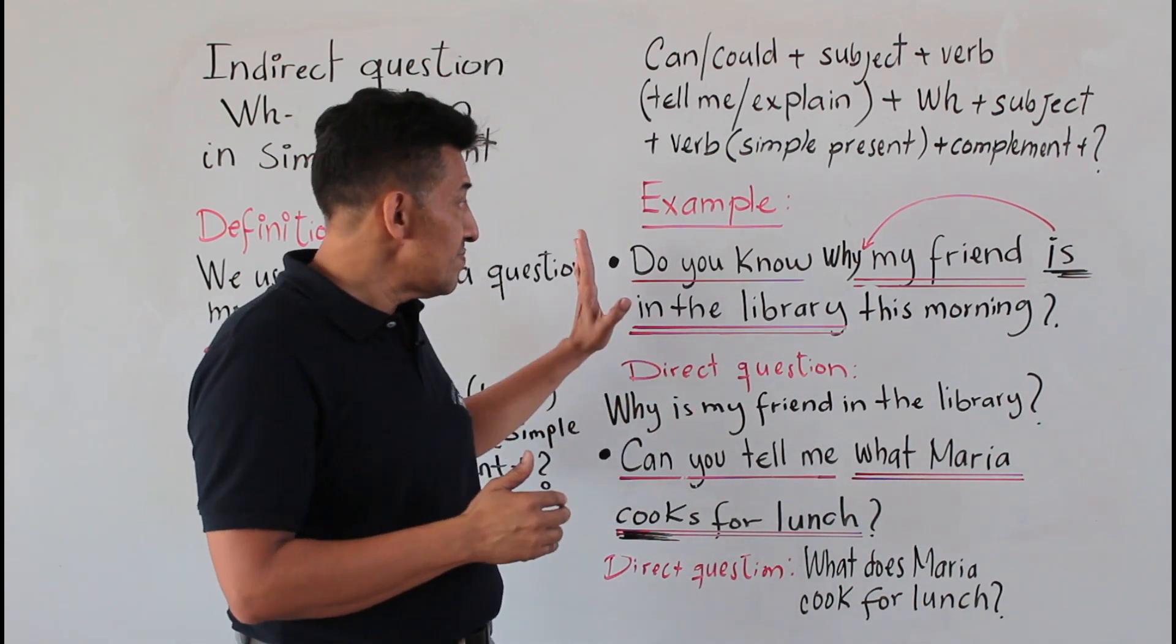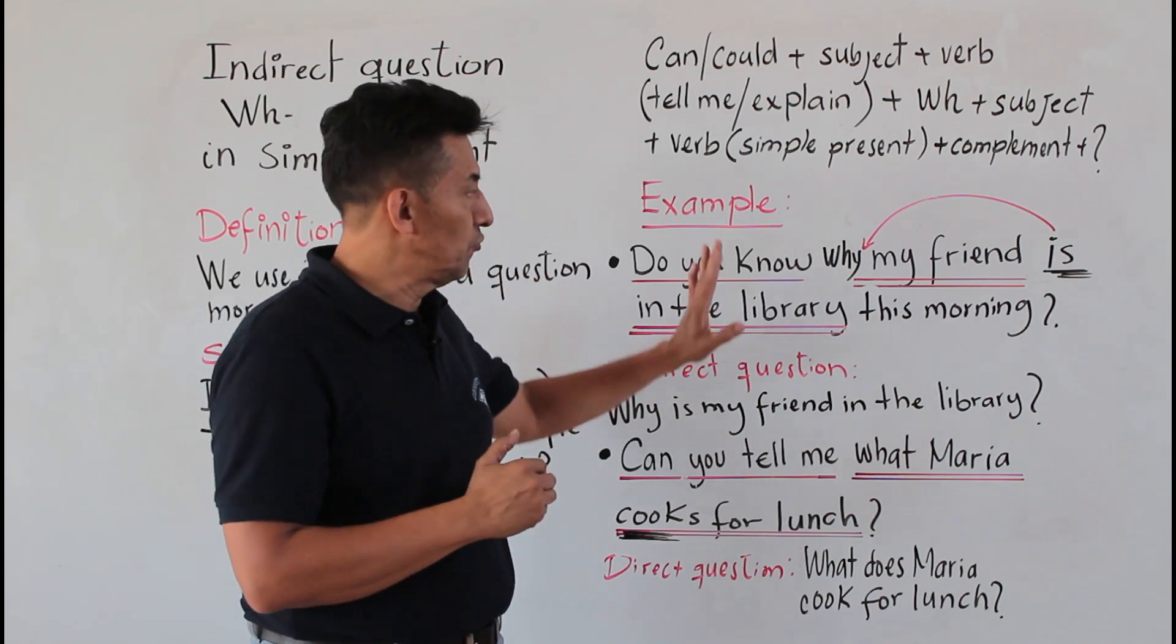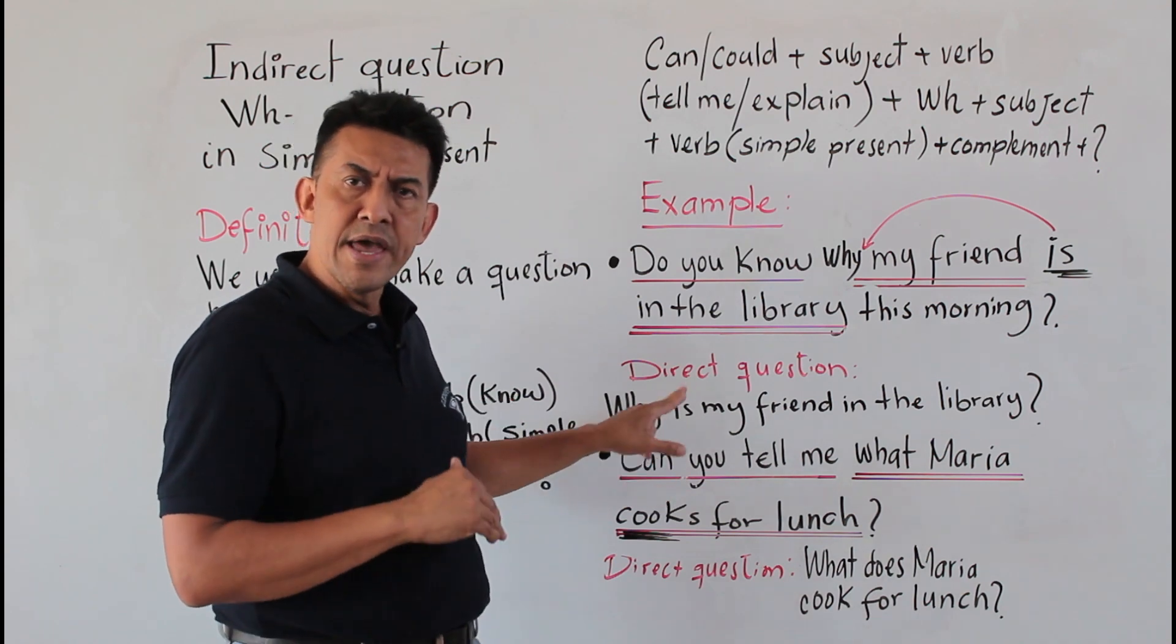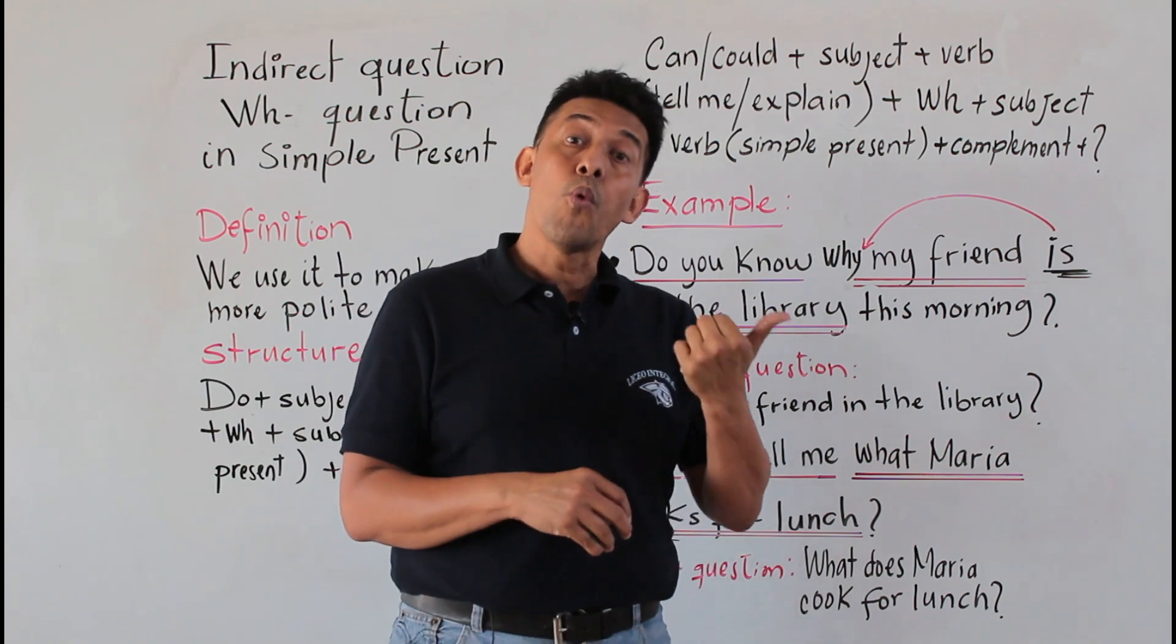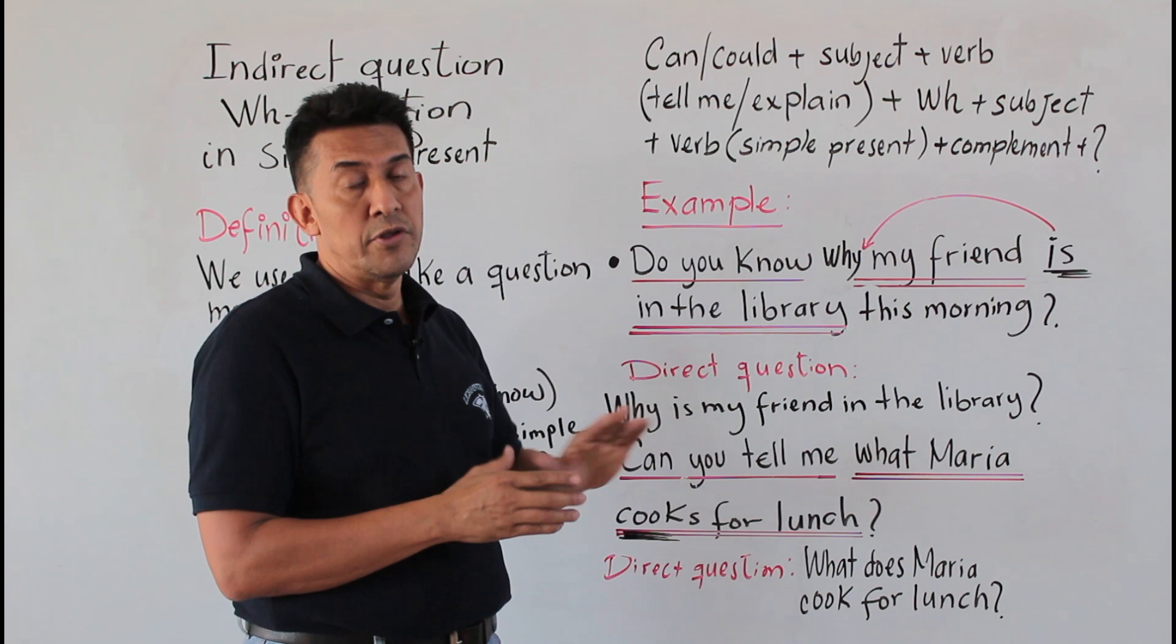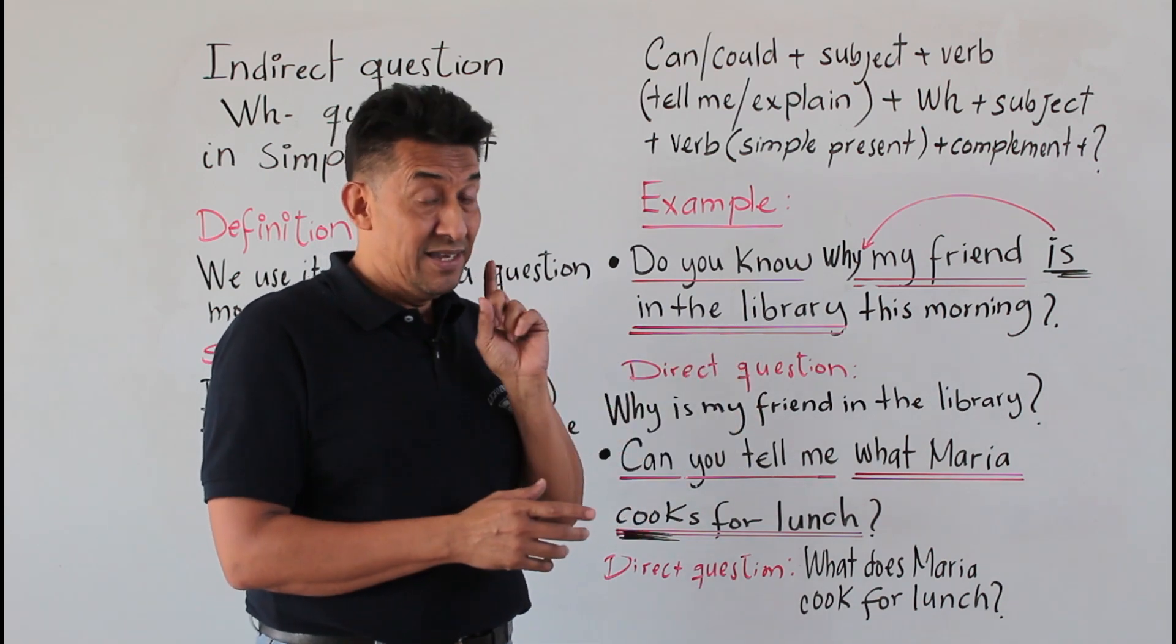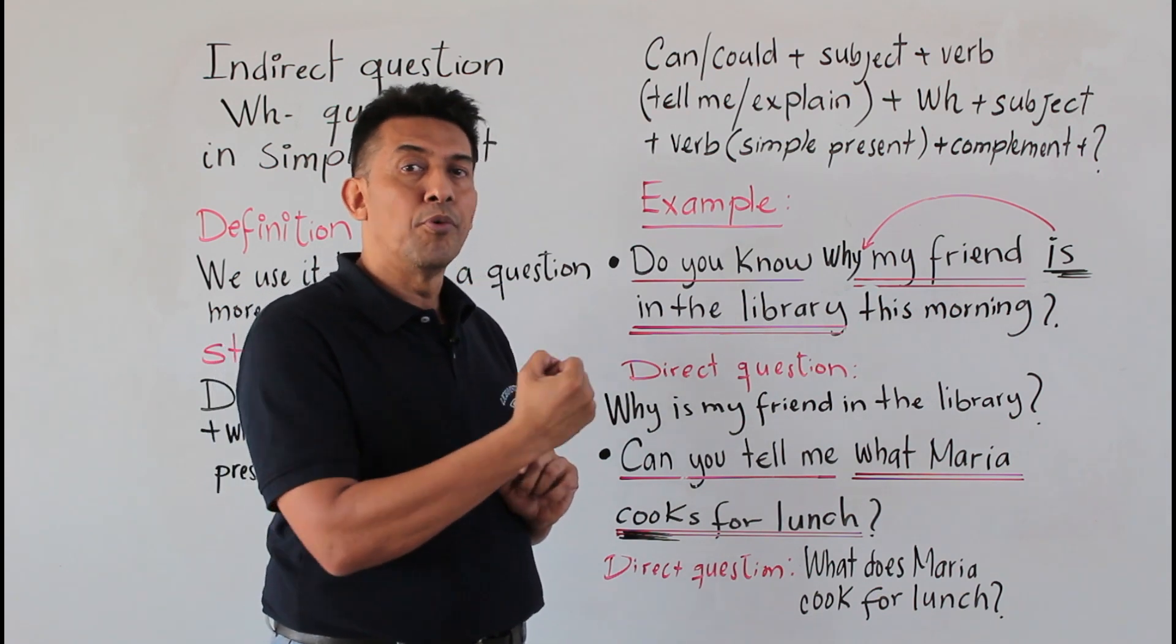But if you want to know how to ask this question in the direct form or the normal way, you can ask 'Why is my friend in the library this morning?' That is the more casual form. But with the indirect question, remember, it's only if you want to be more polite.